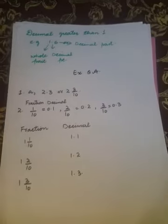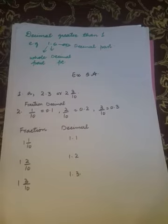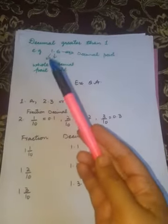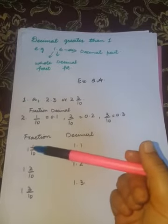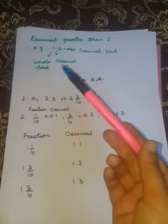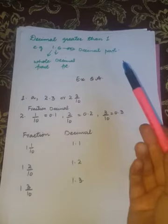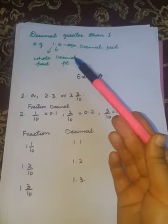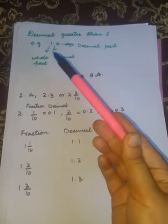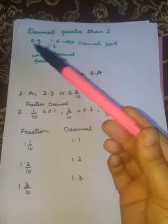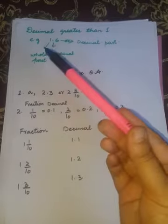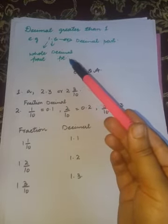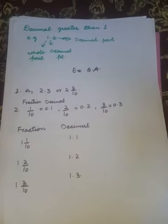Then is the number that are decimals greater than one, means the number which is one point one, one point two, one point three, one point six. This is the decimal that is greater than one because it has the whole part which is one, the decimal point, and the third part which is the fractional part.